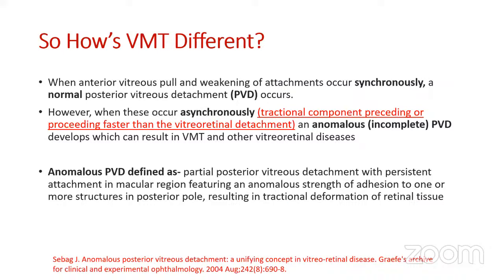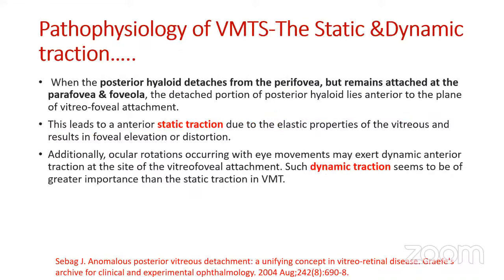VMT (vitreo-macular traction) differs from normal PVD. When the tractional component precedes vitreoretinal detachment, it is called anomalous or incomplete PVD — defined as partial posterior vitreous detachment with persistent attachment in the macular region, resulting in tractional deformation of the retinal tissues. In VMT, when the posterior hyaloid detaches from the perifovea but remains attached to the parafovea and foveola, it leads to anterior static traction. Additional ocular rotations exert a dynamic anterior traction at the site of vitreo-foveal attachment, which is of greater importance than static traction.